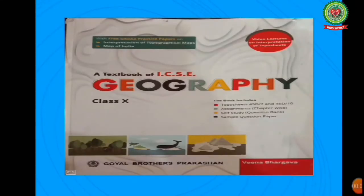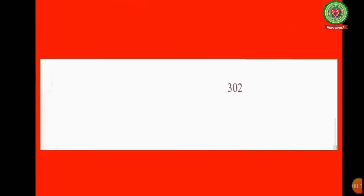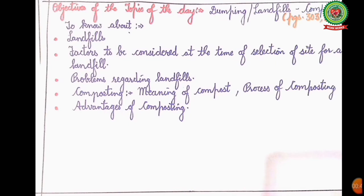Welcome to the geography class. The lesson I am going to continue today is lesson number 18: Waste Generation and Management Methods of Safe Disposal of Waste, given on page number 302 of your geography textbook. Today's topic is dumping, landfills and composting, given on pages 303 and 304, covering landfills, site selection factors, problems regarding landfills, composting, meaning of compost, process of composting, and advantages of composting.